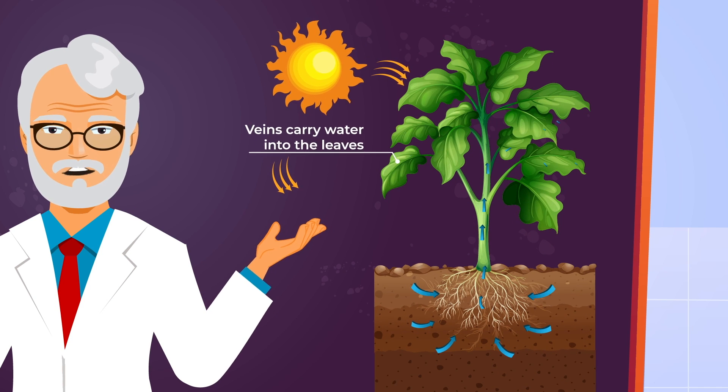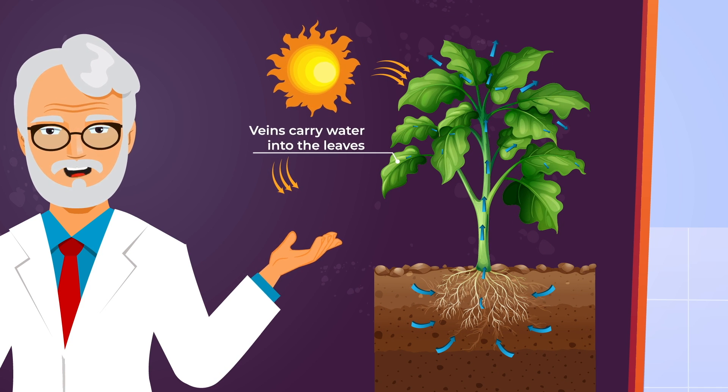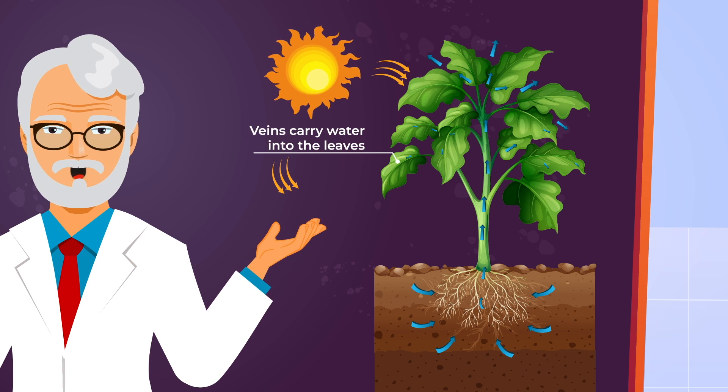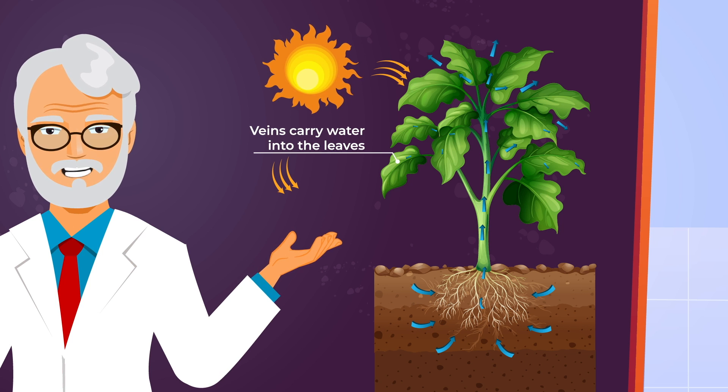At the same time, light energy raises the ambient temperature through convection and raises the leaf temperature through radiation.